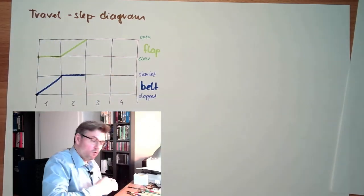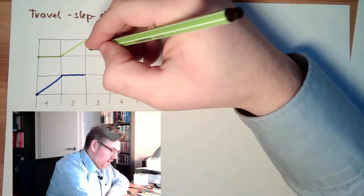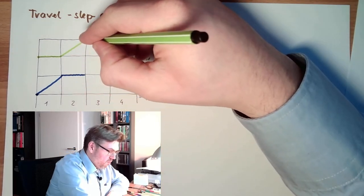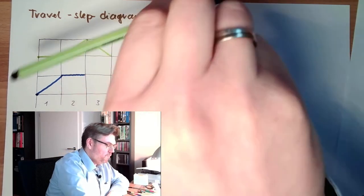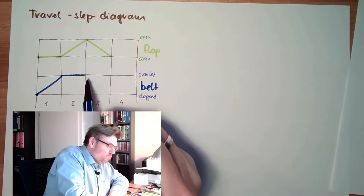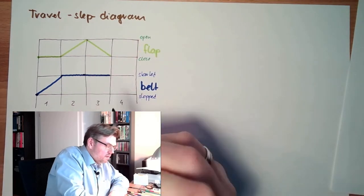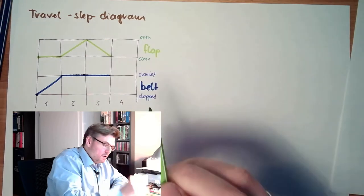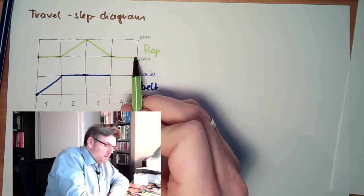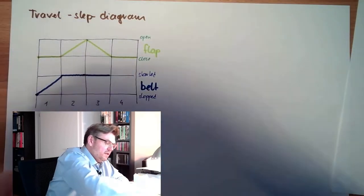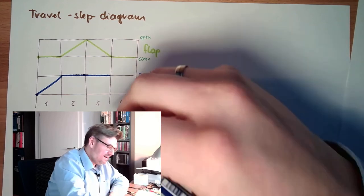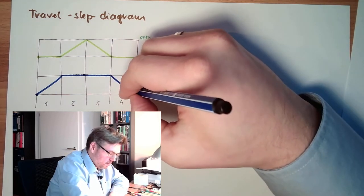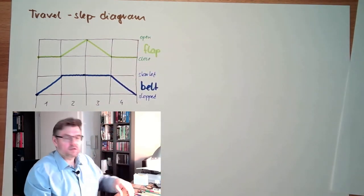Then third step, stopping. A flap shall change from open to closed, belt keeps running. Fourth step, stop the belt. Flap shall stay closed, belt stop. Fourth step, belt is stopped.